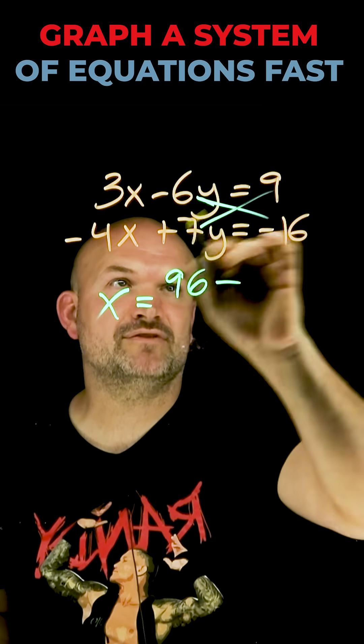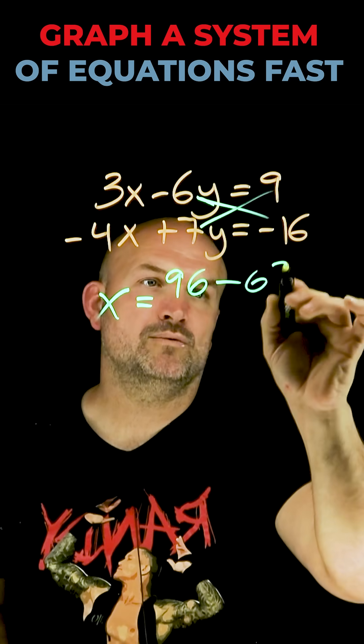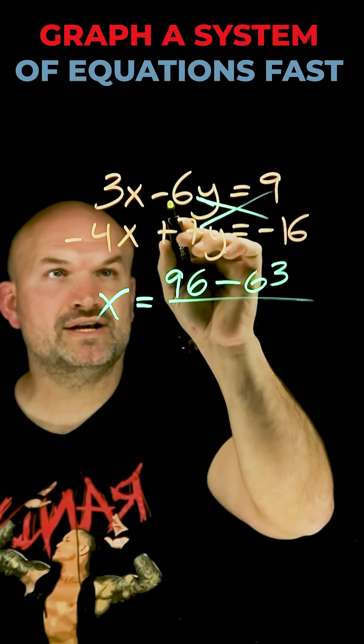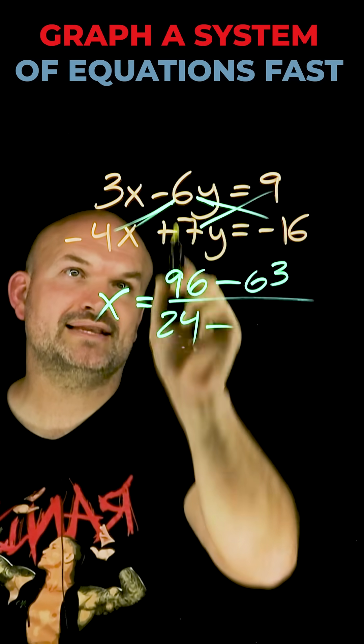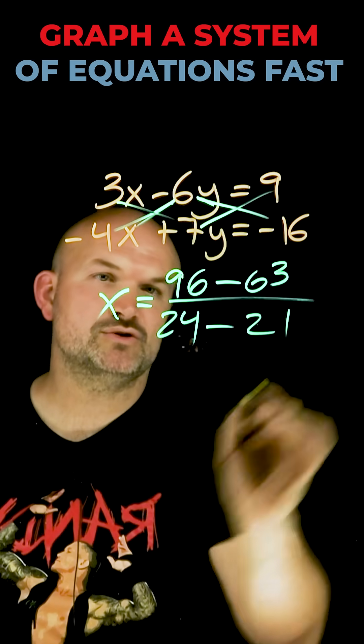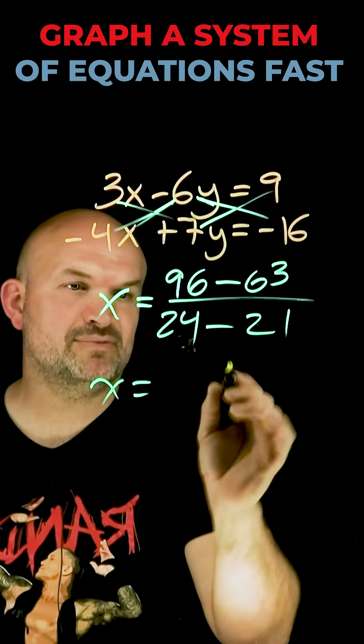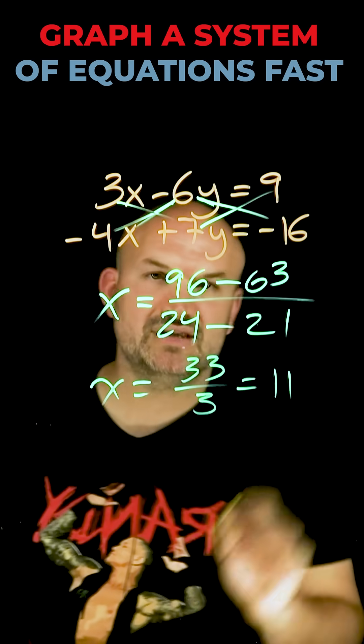Then I'm going to subtract that from 7 times 9, which is 63. Then I go over here and do the product of negative 6 times negative 4, which is positive 24, and subtract that from 3 times 7, which is 21. This simplifies to 33 over 3, which equals 11.